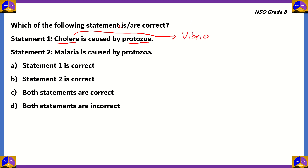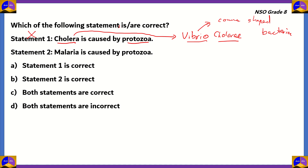Cholera is actually caused by a microorganism called Vibrio cholerae. Vibrio refers to comma-shaped bacteria. That means cholera is caused by a bacteria and not a protozoa, so statement one is wrong. This means options A and C are incorrect, because statement one being incorrect rules out any option where it is stated as correct.